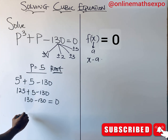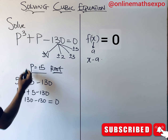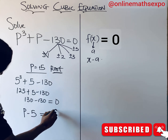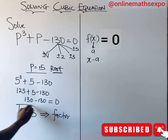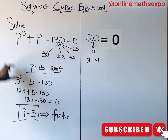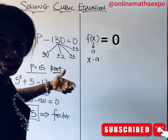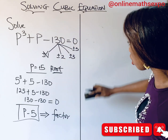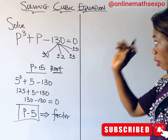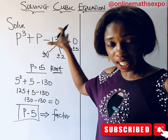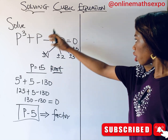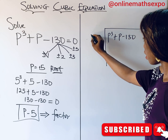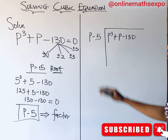So p = 5 is a root, which means (p − 5) is a factor. If (p − 5) is a factor and we use it to divide the cubic, it will leave no remainder. Since we know this, let's now divide the cubic expression using the long division method, dividing by (p − 5).